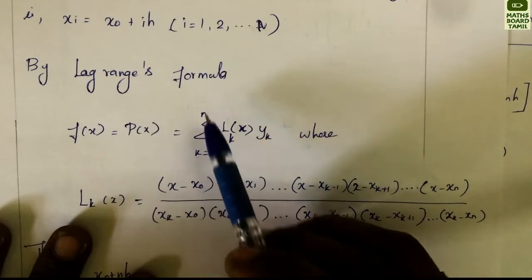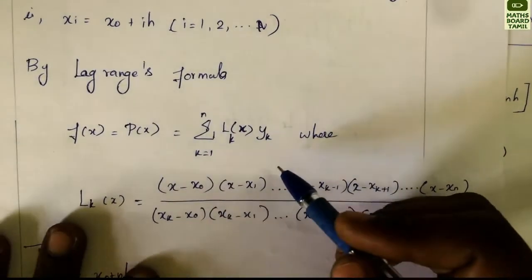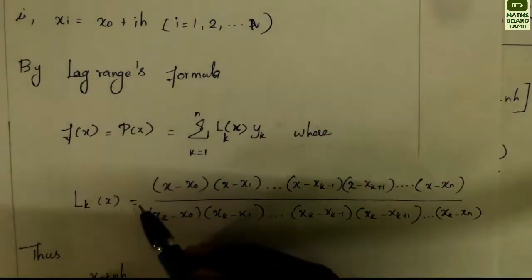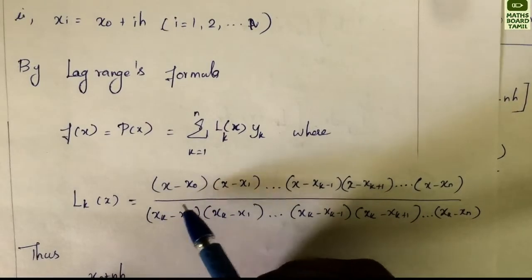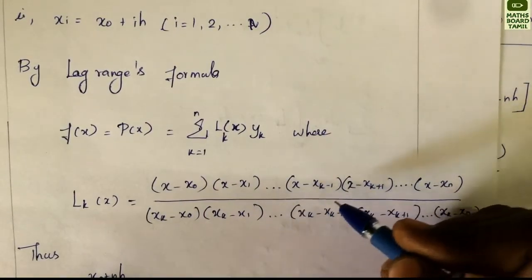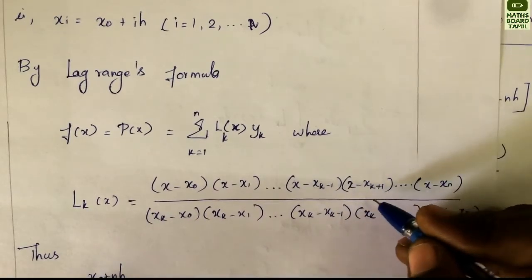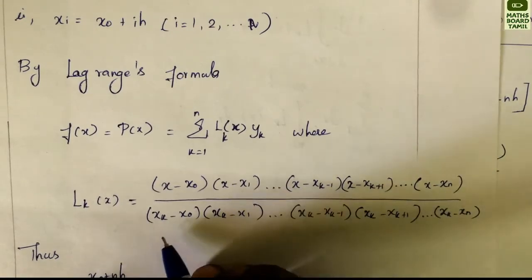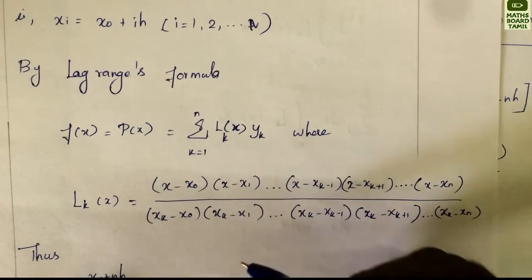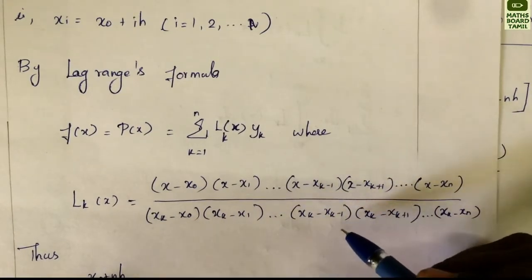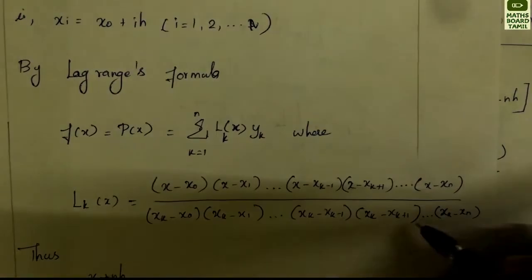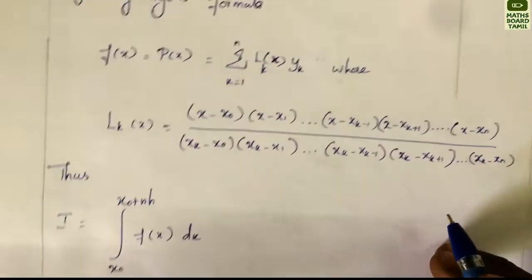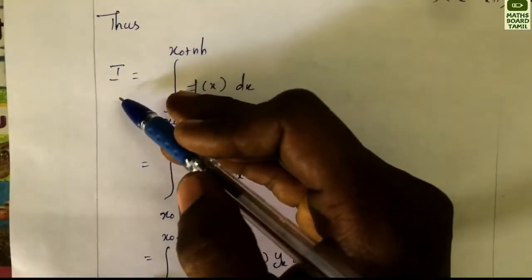So f(x) = p(x) = summation k = 0 to n of lk(x) · yk, where lk is the Lagrange basis: lk(x) = (x − x0)(x − x1)···(x − xk−1)(x − xk+1)···(x − xn) divided by (xk − x0)(xk − x1)···(xk − xk−1)(xk − xk+1)···(xk − xn).